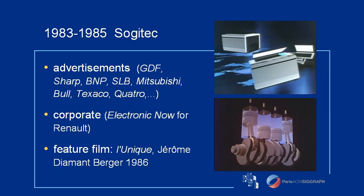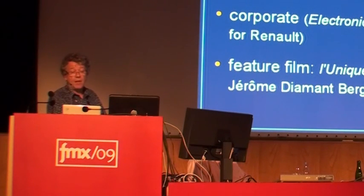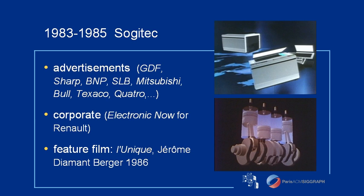Starting in 1983, Sojitek began to use its simulation computers each night to make movies — many advertisements, you have the list there — and about five minutes in a film for Renault on the electronics in their next car, Electronic Now. And in 1986, they created the first special effects for a French feature film, L'Unique. So in that year, Sojitek was the main company making computer graphics in Europe. Xavier Nicolas, who was the founder of this activity at Sojitek and worked on many of these movies, will tell us more later this afternoon.